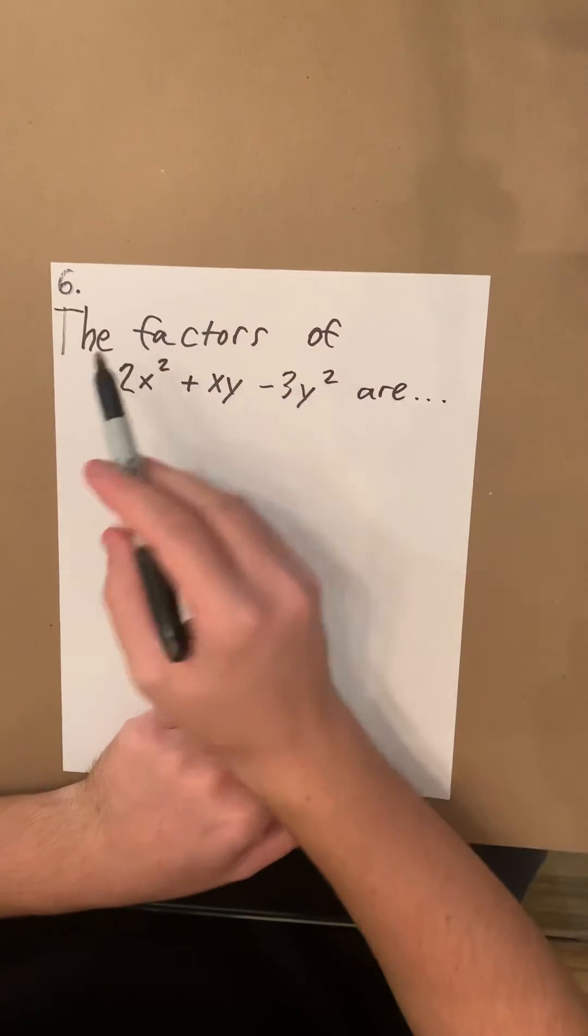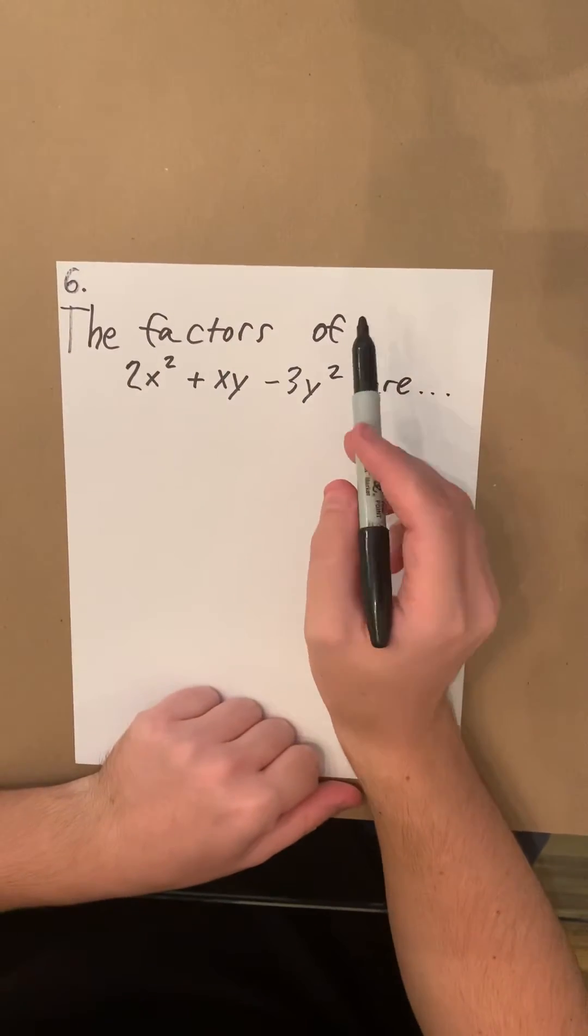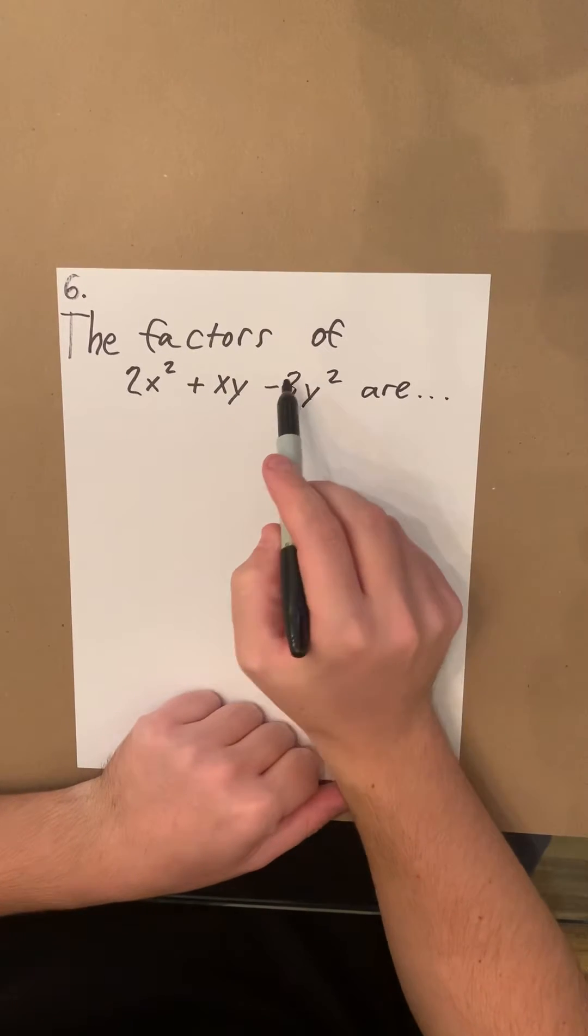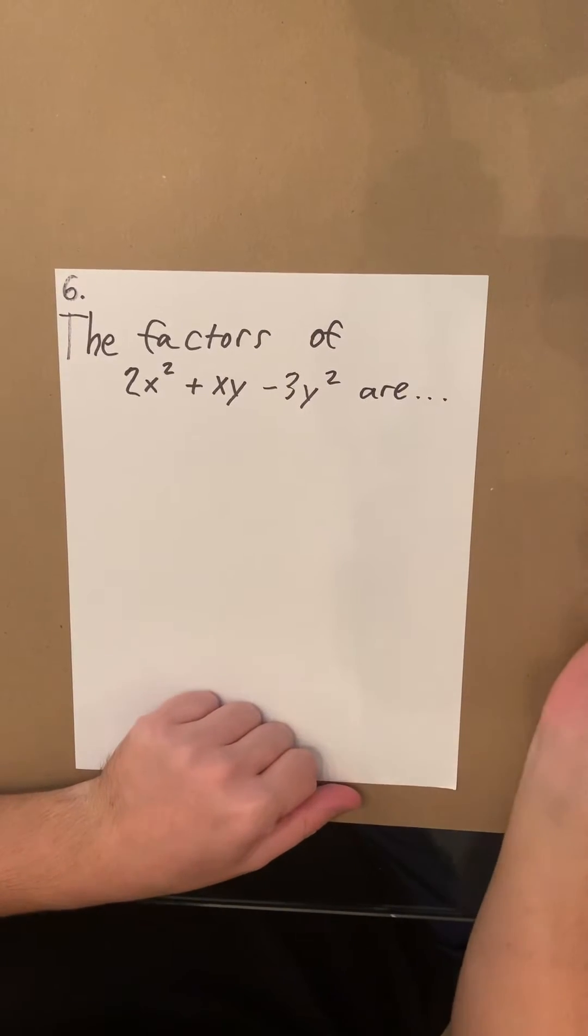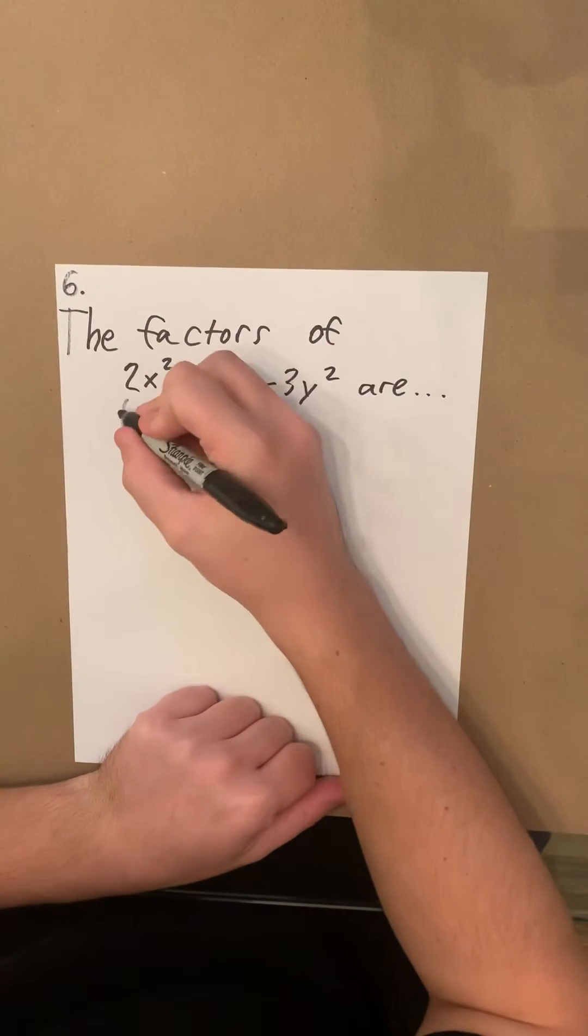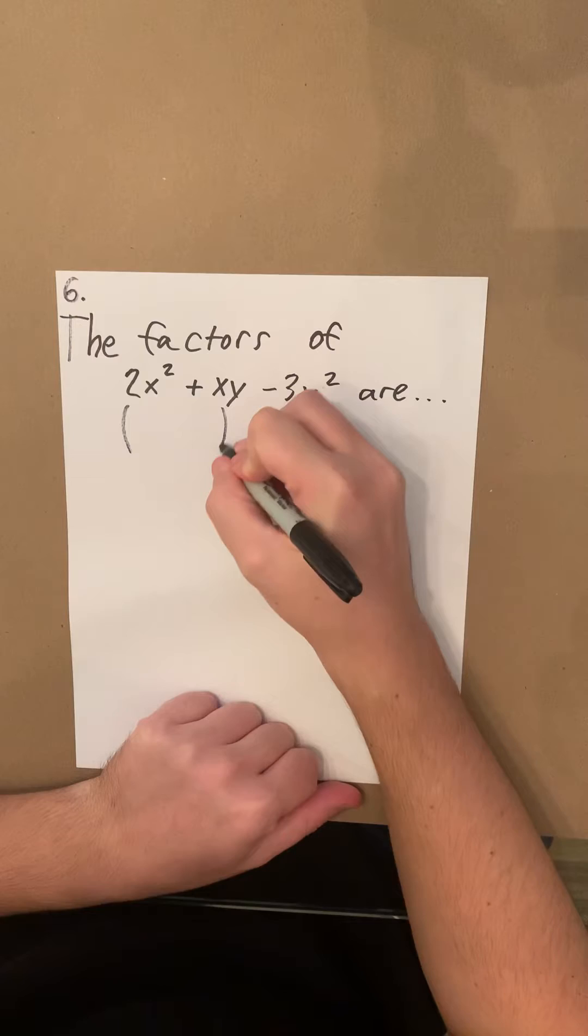For number six, the question is: the factors of 2x² + xy - 3y². Originally with factoring, we would start with two parentheses.